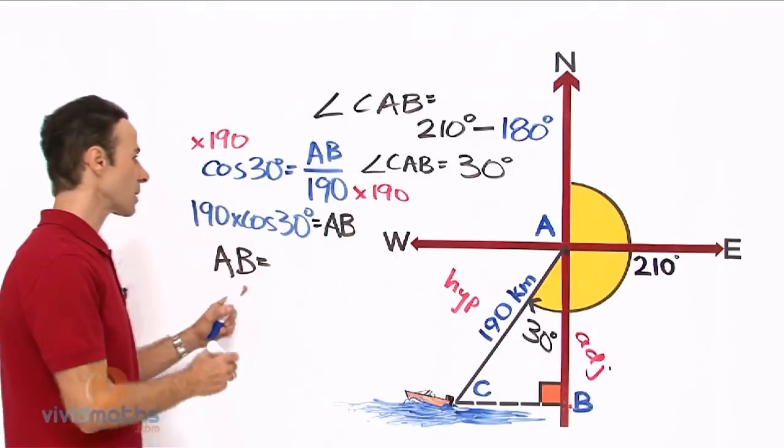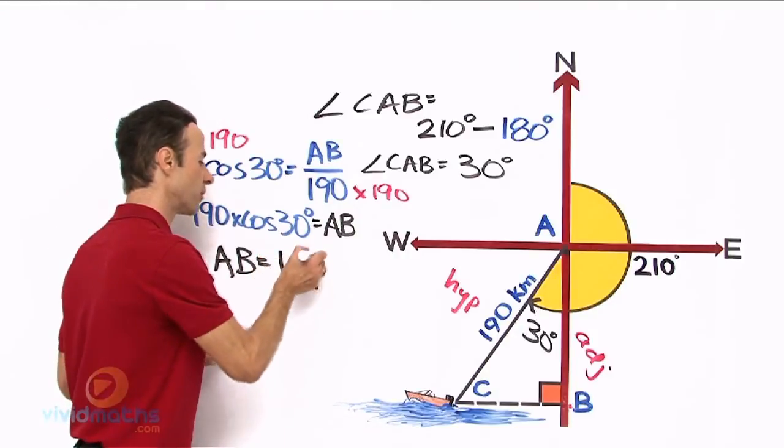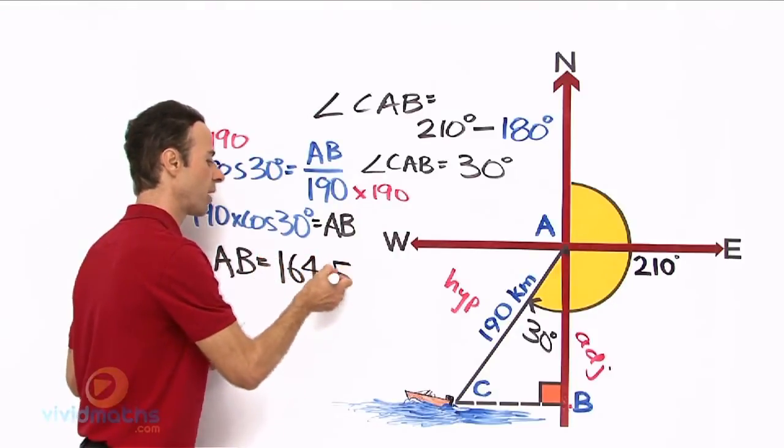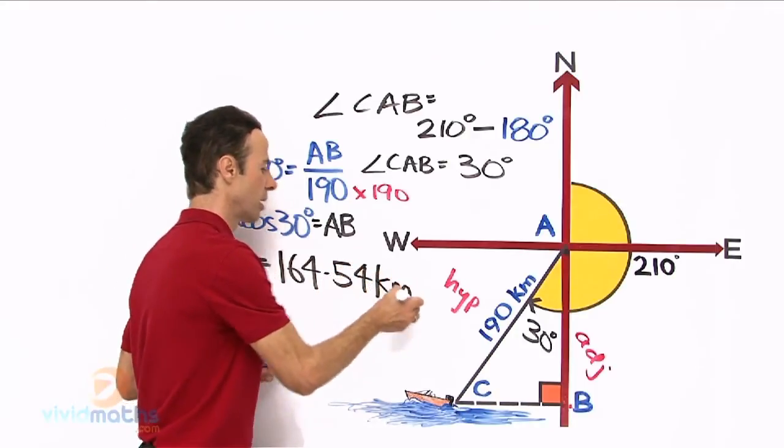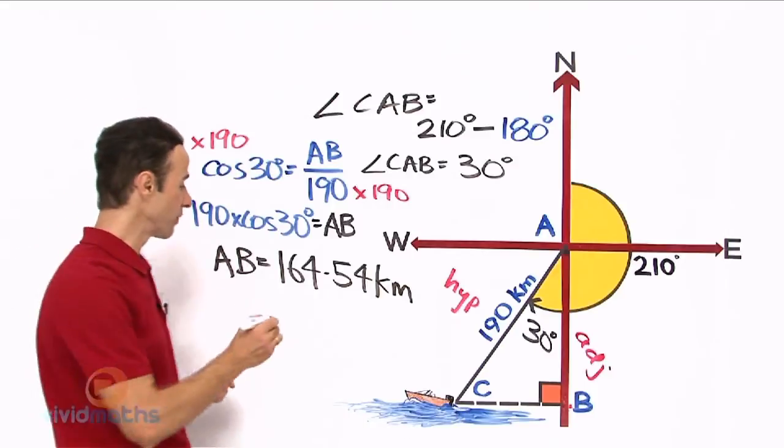That is going to give us, to the nearest kilometer, the distance south from port A down to B equals 164.54 kilometers, and then we got to write in the direction and then we are finished.